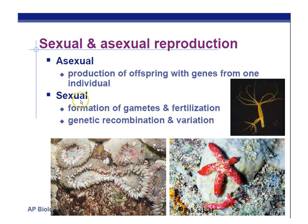Sexual reproduction involves the formation of gametes and fertilization. When you make your gametes, there's a lot of diversity possible. You have crossing over during prophase 1, independent assortment of chromosomes during meiosis 1, and two sources of genetic information. Those three things together result in a lot of diversity in the possible offspring being made.